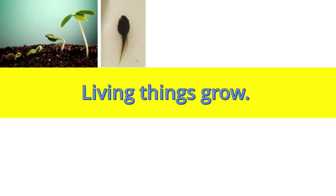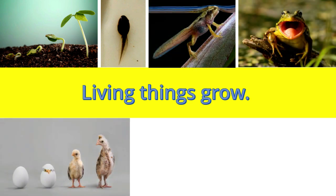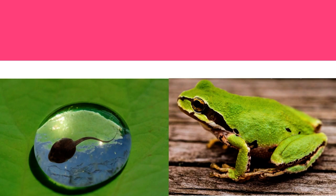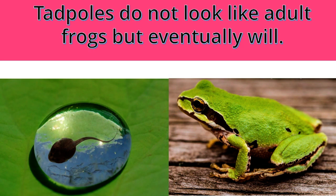Living things grow. What happens as living things grow? All the young of living things grow to become bigger or taller and heavier. There are young of some animals that do not look like the adult animals. However, they will grow to look like their parents eventually.